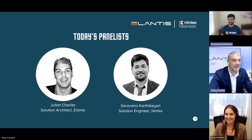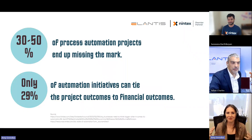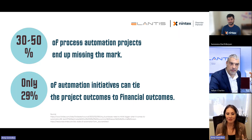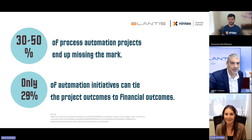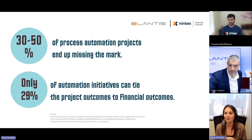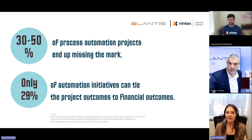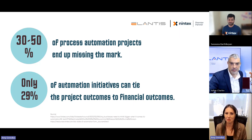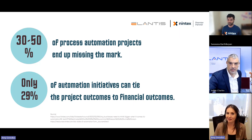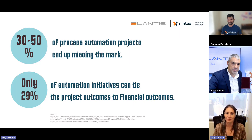Thank you for having me. So to get us started, I wanted to share a couple of interesting statistics. Up to half of automation projects might end up missing the mark, according to recent studies. And even less than a third of projects can actually be tied to financial outcomes when we think about automation projects. These are some telling statistics that things aren't quite hitting where organizations need them to be. So with this in mind, maybe you guys can share some key principles for developing an effective automation strategy.